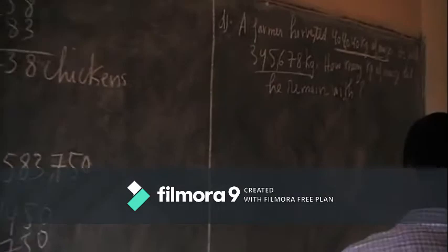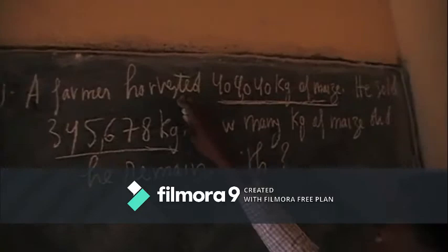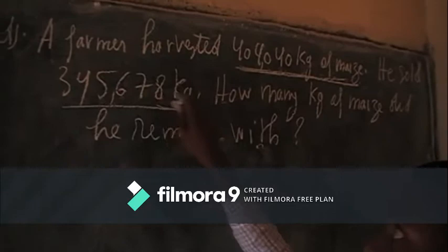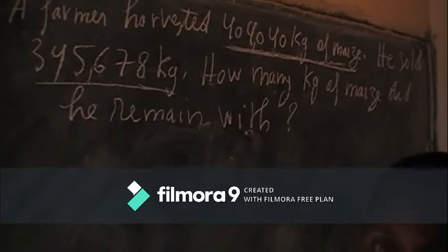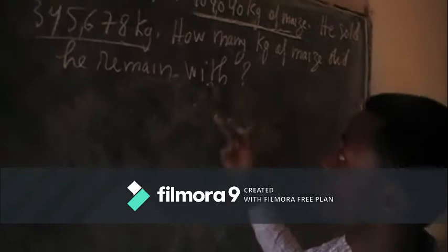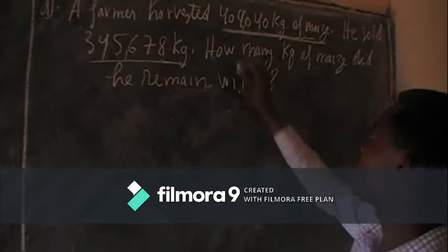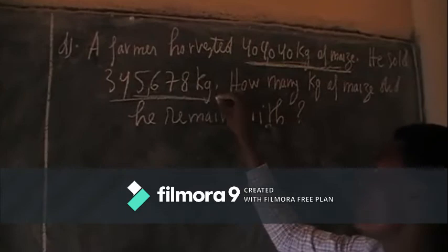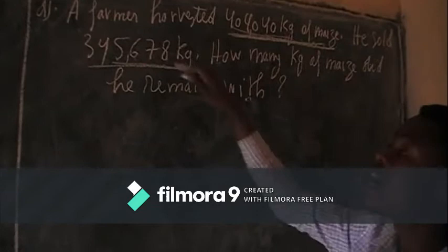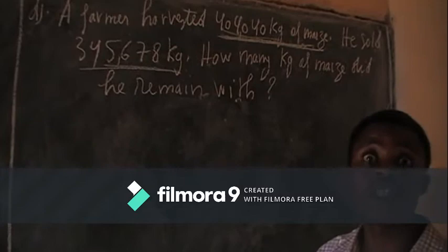Let us do the last one. A farmer harvested 484,040 kilograms of maize. He sold 345,678 kg. How many kilograms did he remain with? So our task is finding the total kilograms this farmer remained with. You have the total kilograms of maize harvested minus the total kilograms of maize sold, to get the remaining.